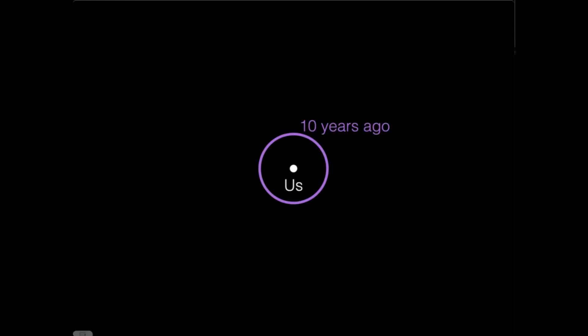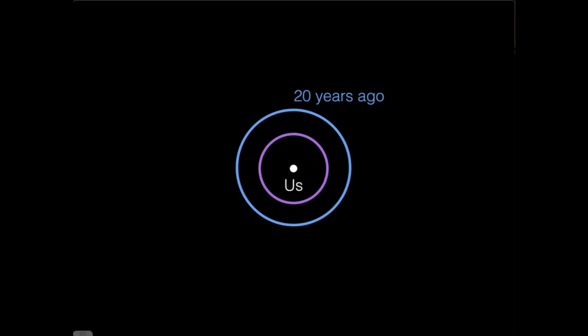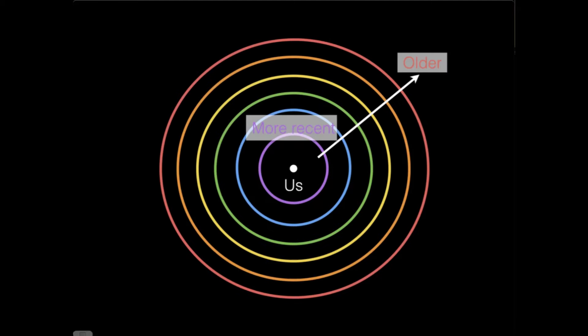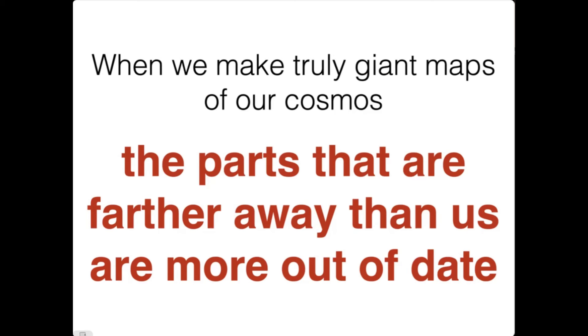If I look 20 light years away, I'm seeing the universe as it was 20 years ago, and I can go on and on—which is another way of saying that if I make a truly gigantic map of our universe, the inner regions will represent a more recent universe, whereas the farther-out regions represent the older universe. So the farther away things are, the more out of date.